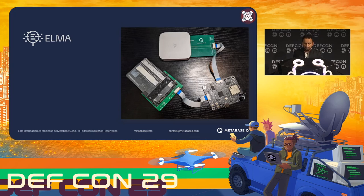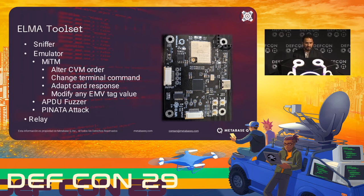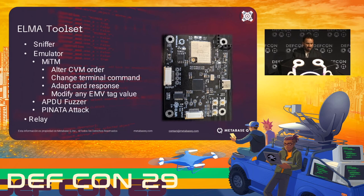To understand a little bit more about the ELMA toolset, it's necessary to understand a few concepts. The idea of implementing ELMA is to have a device that can help you with different tasks. One of the most important is sniffing traffic. The second is the emulator — how you can talk to the terminal simulating that you are a physical card when you're actually a board — in this case, ELMA. And in the middle of the emulator we have the man-in-the-middle, where you can change terminal commands, alter data, adapt card responses, and modify any EMV tag value.